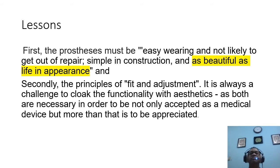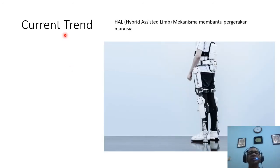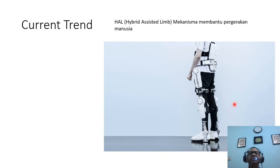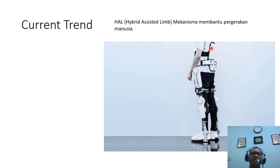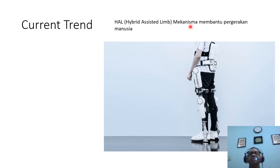Moving to the current trend — this is the Hybrid Assistive Limb (HAL), which is available at our USM hospital in Kubang Kerian, for persons with problems walking due to accidents and so on, under the PERCASO clinic. This is a piece of robotics with separate controllers and actuators, with feedback from EMG and other sensors. It is a very complicated piece of machinery and is not cheap, so accessibility for patients is also an issue here.